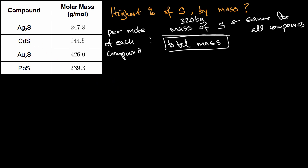And you could see very clearly that this compound right over here has the lowest molar mass. So we're done. This has the highest percentage of sulfur by mass, because per mole, it has the same mass of sulfur as everything else, but it has the lowest total mass. So it's going to have the highest percentage of sulfur.